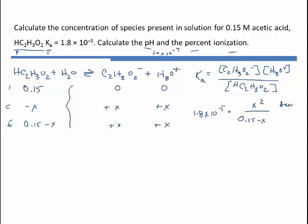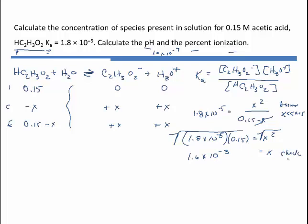We will assume that x is much, much smaller than 0.15, and that way we can ignore this term. When we ignore this term, then we can solve for x by multiplying both sides by the 0.15. And then we can take the square root of both sides to get rid of the x squared. And this will give me an x value of 1.6 times 10 to the minus 3. You have to always check your assumption. If I were to take 0.15 and subtract 0.0016 from it, I would still get 0.15 to two significant figures. So that is a very good assumption to make.